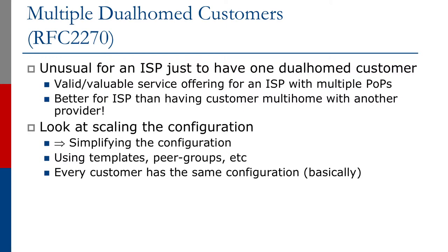What we want to do is look at scaling the configuration for the upstream provider — and by scaling I mean simplifying it as well. We'll use our chosen equipment vendor's best practices for making the configuration easier to manage on the router. That means using templates and, in Cisco's case, using peer groups.